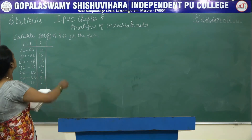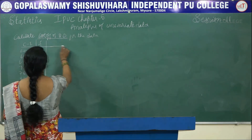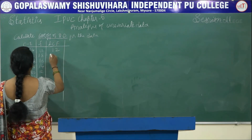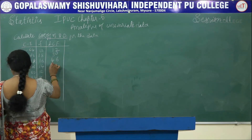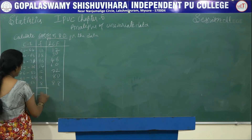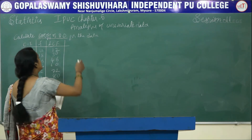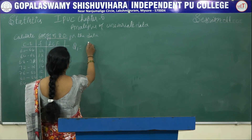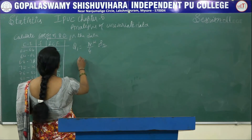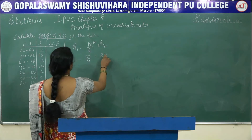To find the coefficient of QD, we need Q3 and Q1 values. The first step is to find the LCF: 12, 30, 46, 60, 72, 80, 88. N is equal to 88. Since this is a class interval problem, to find Q1 we use the N by 4th observation — not N plus 1. So it is 88 by 4, which is the 22nd observation.